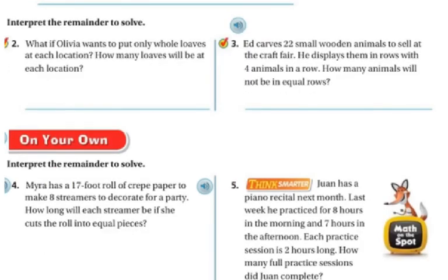Now, this next question says to interpret the remainder to solve. So on number 2, they're saying, what if Olivia wants to put only whole loaves at each location? How many loaves will be there? Well, if she's only putting whole loaves, well, there's only 8 whole loaves.